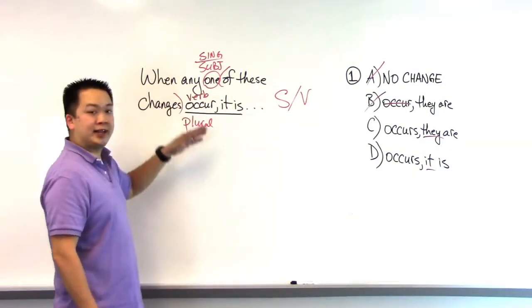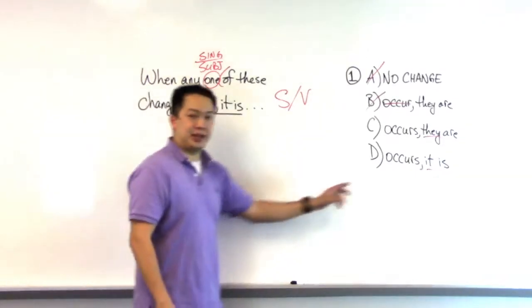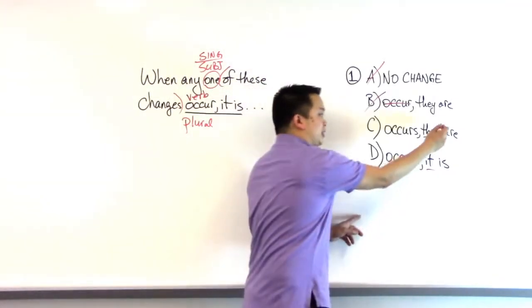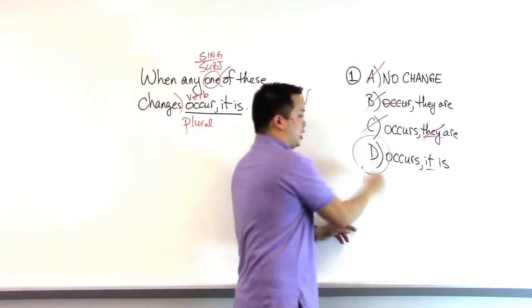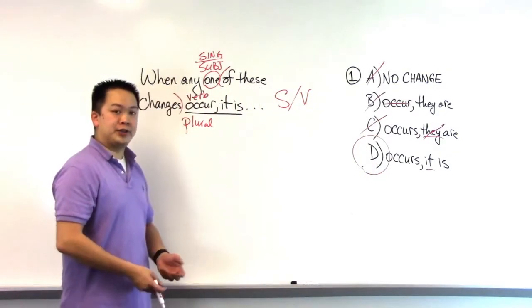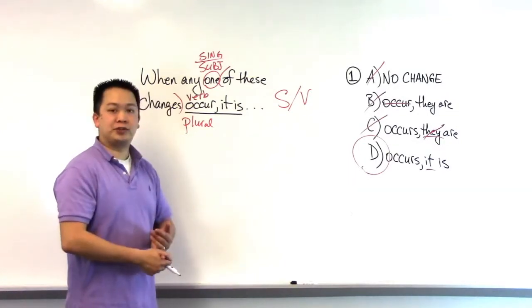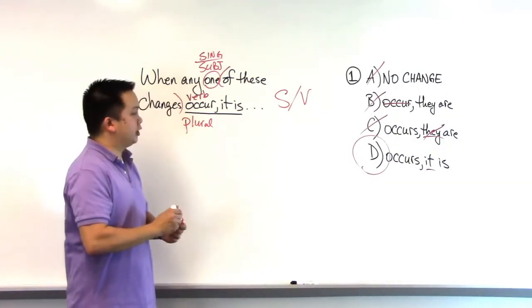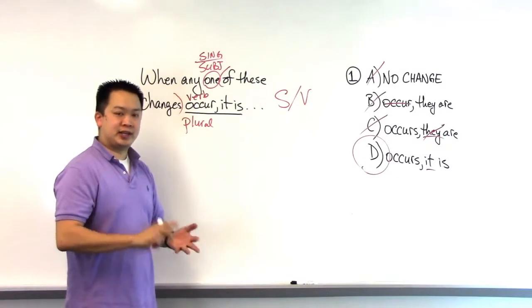And so therefore, because the antecedent is singular, I need a singular pronoun, and that's why I eliminate answer choice C. And I know that answer choice D is correct. So by identifying the grammatical errors in the sentence, by understanding parts of speech, we were able to methodically eliminate answer choices to get down to the right answer.